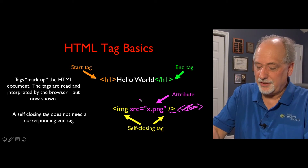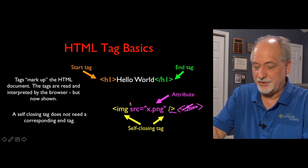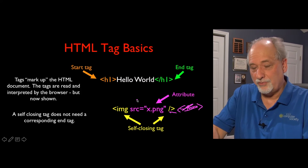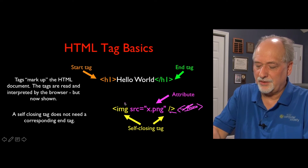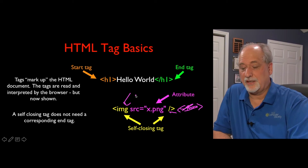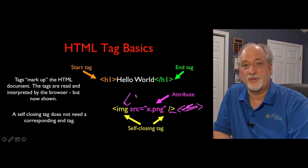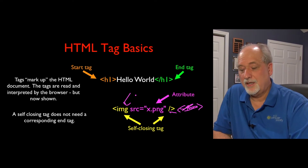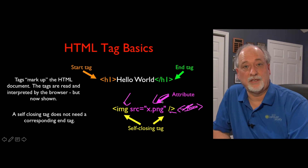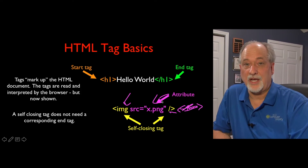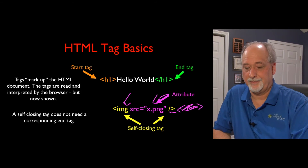Another thing you will get used to is the fact that you can put attributes on the opening tag — key-value pairs. You go read the documentation on the image tag, and it'll say put a source attribute on it to say what file we want to display as the picture. The image tag is basically to show pictures.